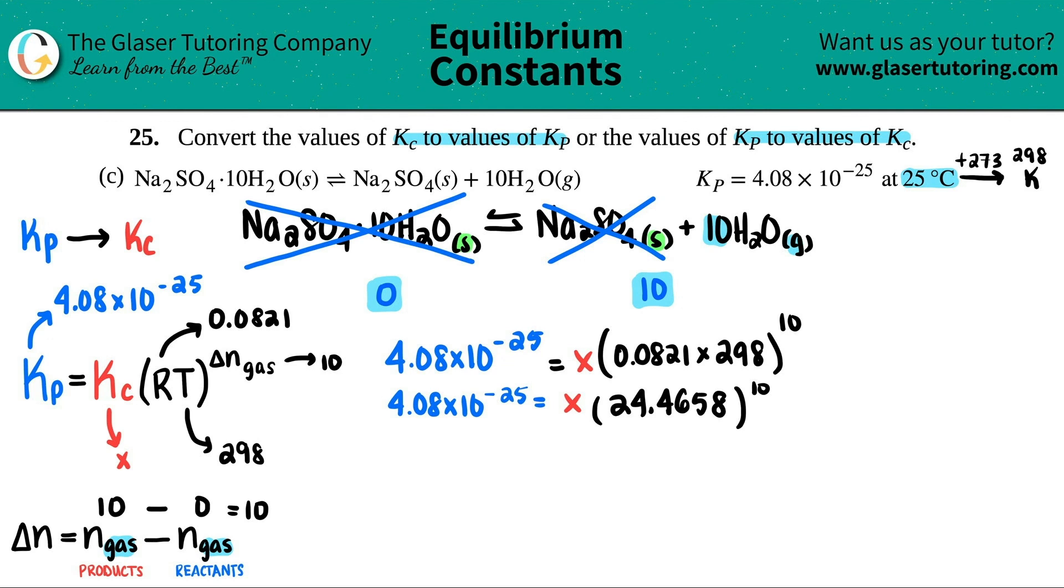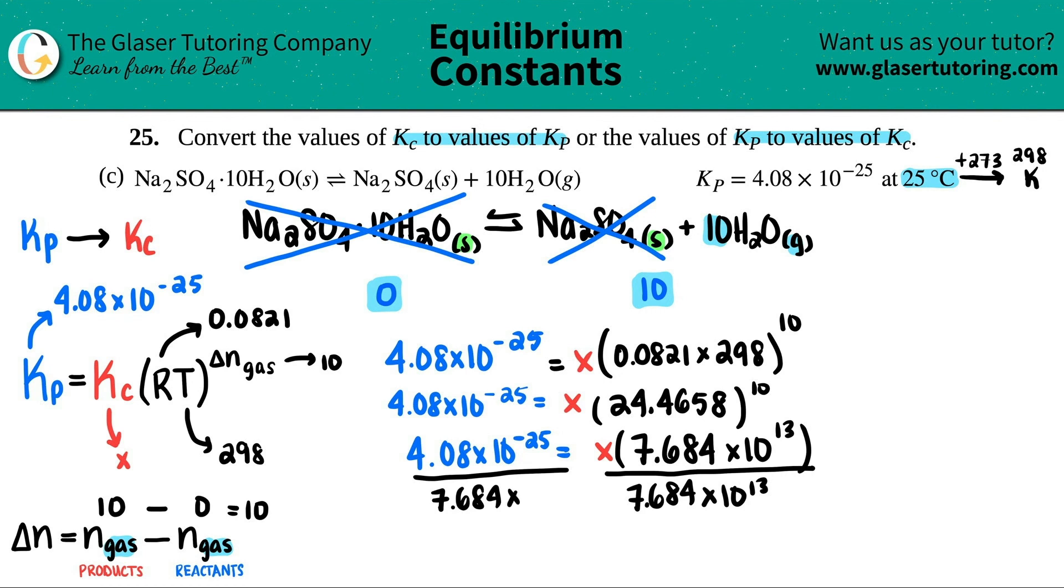Okay, now we're getting crazy numbers here. So we got 4.08 times 10 to the negative 25th. This equals the X value. And now, since I raised it to the 10th, I now get 7.684 times 10 to the 13th. Solve for X. I'm going to divide by 7.684 times 10 to the 13th on both sides. Cancel that out. And now I have my X value, which remember was my Kc value.